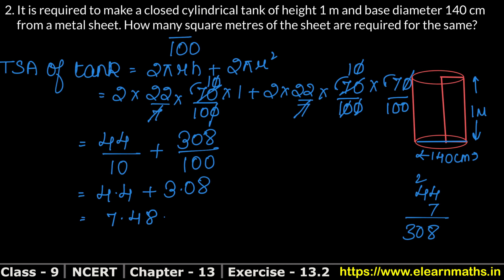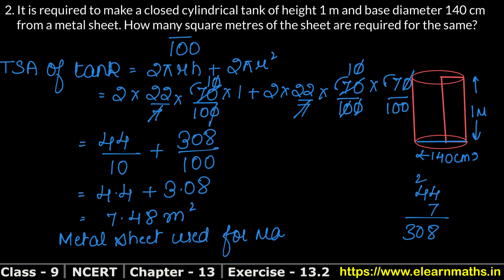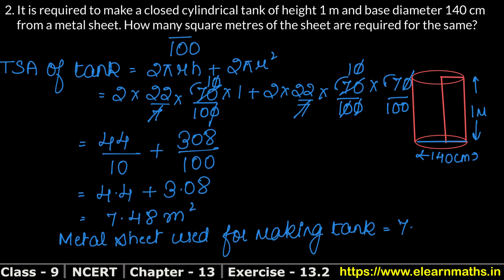Since the unit was in meters, the answer is in square meters. The metal sheet required to make the tank is 7.48 m².